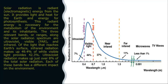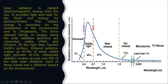Infrared radiation is around 47 to 49% of the radiation we receive. Infrared radiations are basically heat radiations — when we feel warm in the sun, that is because of the infrared radiation.